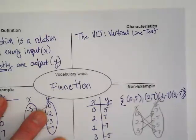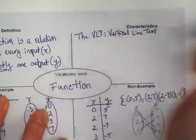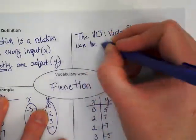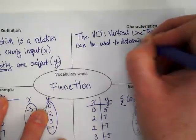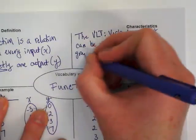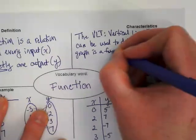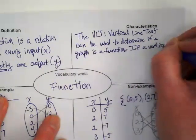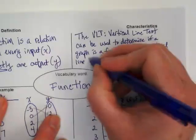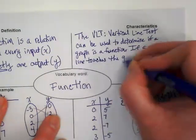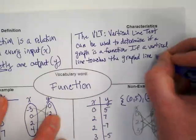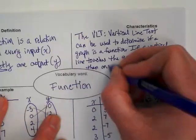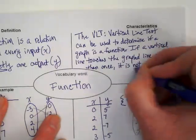Which direction does a vertical line go? Up and down, right? Horizontal goes across, vertical goes up and down. So we're looking for a line that would be parallel to the y-axis. And here's what we're going to say here. The vertical line test can be used to determine if a graph is a function. If a vertical line touches the graphed line more than once, it is not a function.